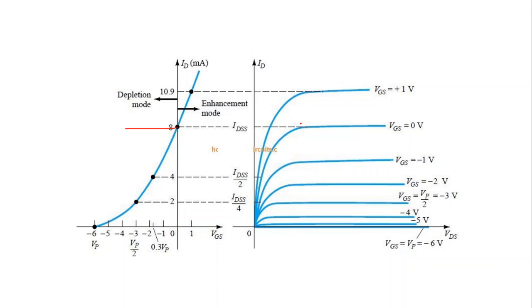In the depletion type MOSFET, the difference lies in the positive VGS region — the drain current is greater than IDSS for VGS greater than 0 volt. So we have drain current flowing even when VGS is greater than 0 volt.